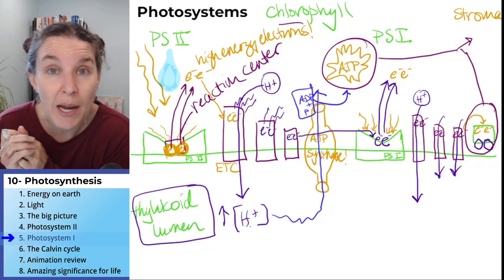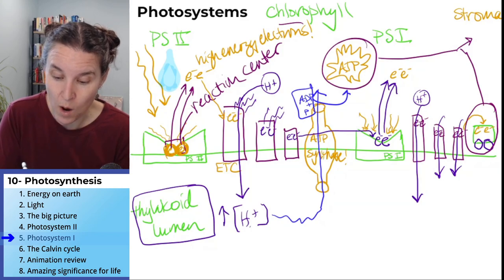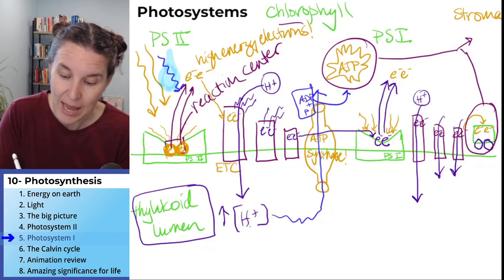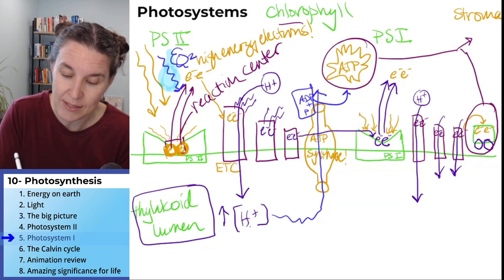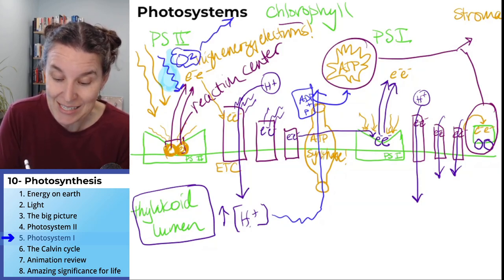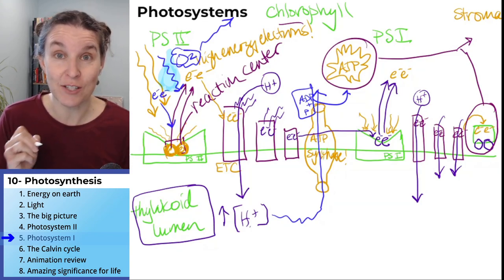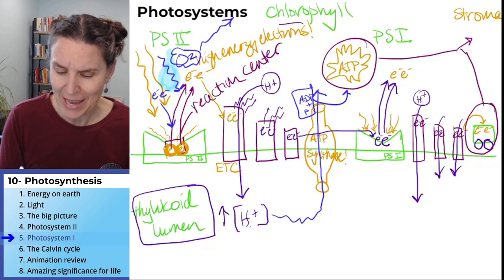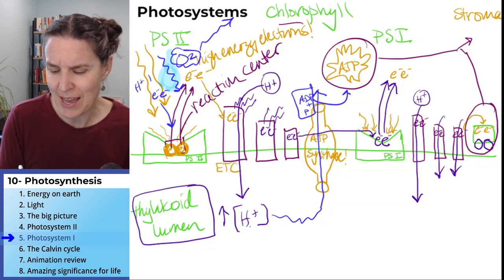It's just backwards this time. The water is going to split and become oxygen gas that blows off, and electrons that replace the electrons from photosystem 2, and a couple of hydrogen ions.